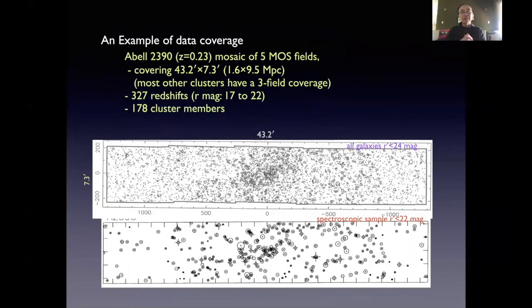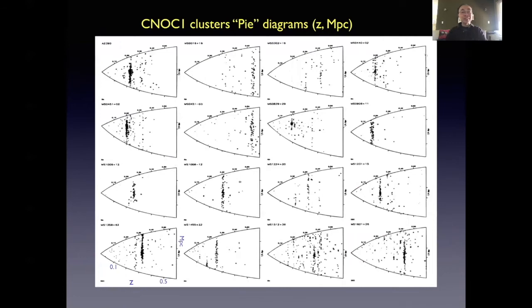Here's an example of the data coverage of Abell 2390, which is the cluster that we actually have the most data. We did that with a mosaic of five MOS fields covering 43 arc minutes. And this gives an extent of 9.5 megaparsecs, which is quite large. We obtained 327 redshifts, of which 178 are cluster members. The graph on the top of the two shows all the galaxies in these five MOS fields brighter than 24th magnitude. You can clearly see the cluster in this halo. And on the bottom is the distribution of the galaxies that we actually have redshifts. This plot shows the 16 pi diagrams of the whole sample. Each pi diagram is running in redshift from left to right, and then the y coordinate is the one-dimensional spatial information on the position of the galaxy. So you can see that each cluster has this concentration of galaxies at certain redshift.